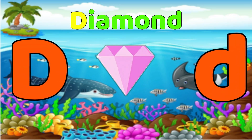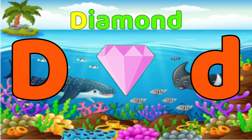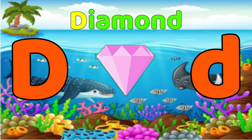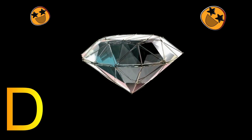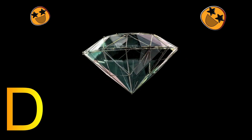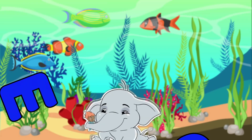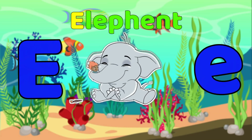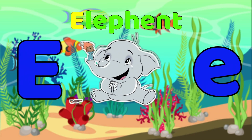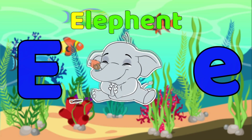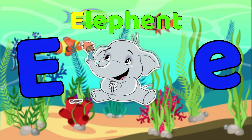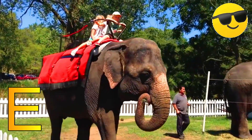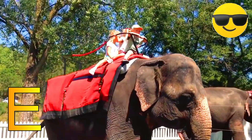D is for Diamond. D-D-Diamond, D-D-Diamond, D, Diamond. E is for Elephant. E-E-Elephant, E-E-Elephant, E, Elephant.